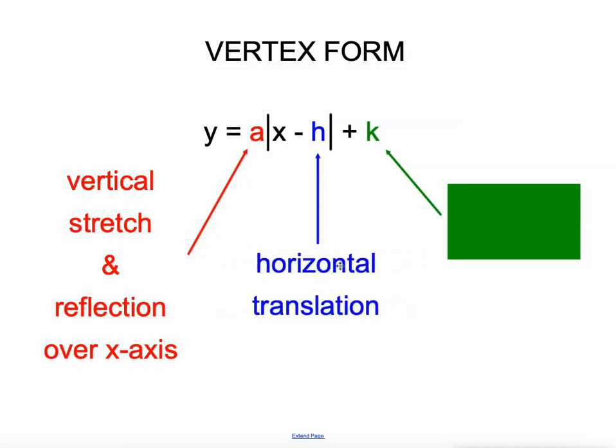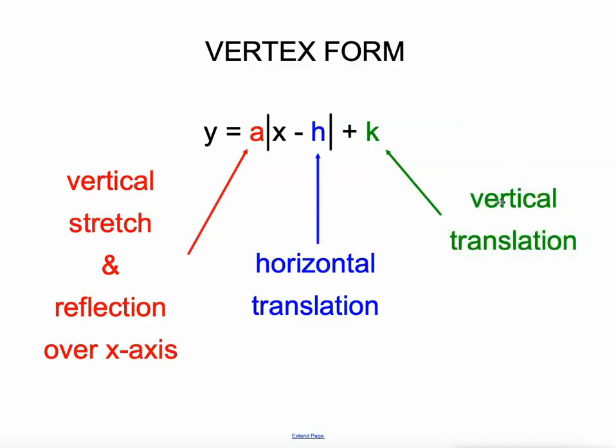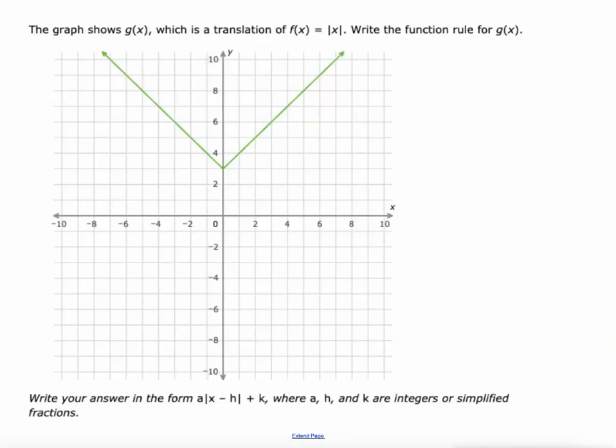The h value represents the horizontal translation of the function—has that function been slid left or right. The k value is the vertical translation, so has that V-shaped absolute value function been slid up or down. Notice that subtraction right there, that's important. That's always subtraction, this one's always addition. If it is addition, that means you must have subtracted a negative.